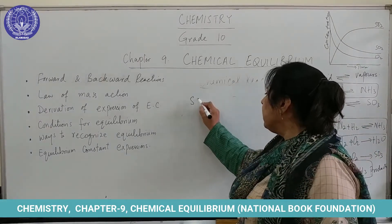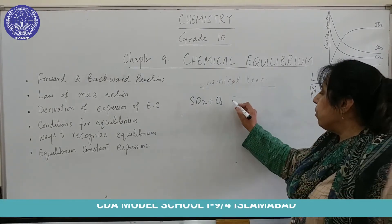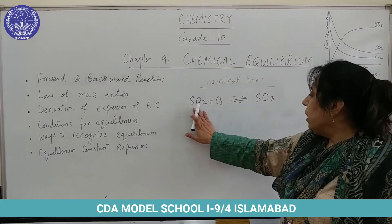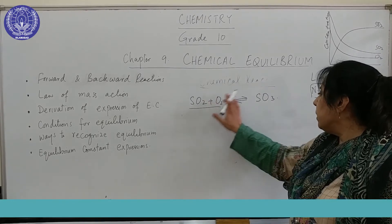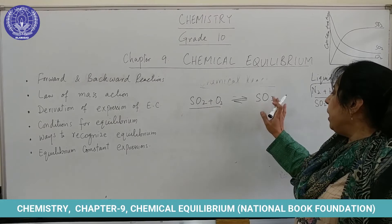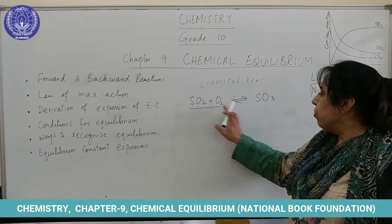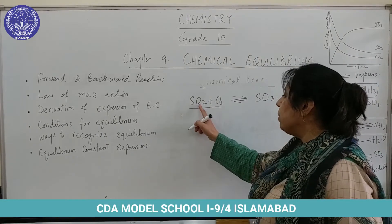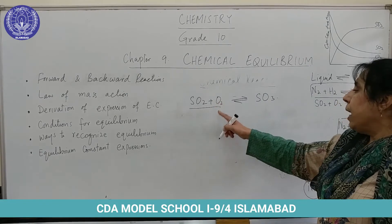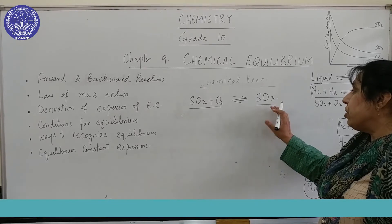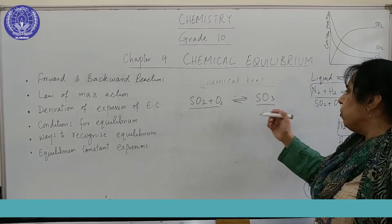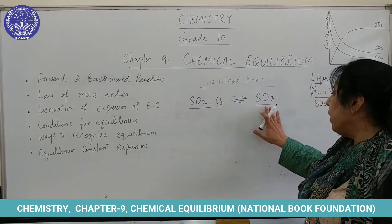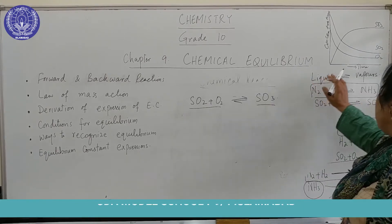Now we will discuss SO₂ with oxygen. When SO₂ sulfur dioxide reacts with O₂ it forms SO₃. This reaction is called the forward reaction. And SO₃ reacting back to form SO₂ and O₂ is called the reverse reaction. Initially the concentration of SO₂ and O₂ is very high and gradually they react together to form the product. Initially the concentration of the product is very low — it is zero. The reactants are converting into the products, so the concentration of reactants is decreasing whereas the concentration of the product is increasing.